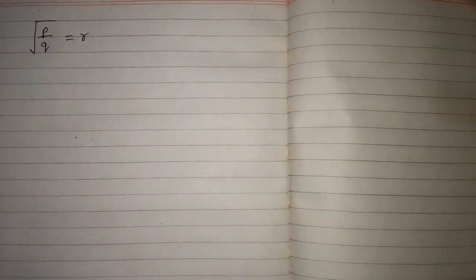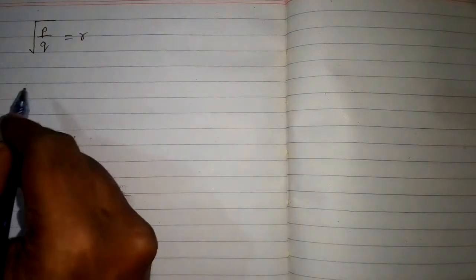In this video, we have to make Q the subject of the formula. Here we have square root of P upon Q equals R. We must have Q on one side of the equation and all the other things on the other side.